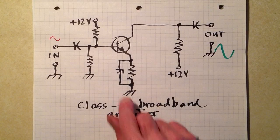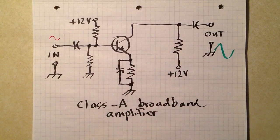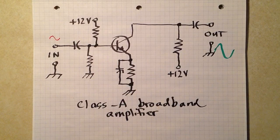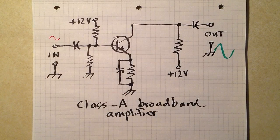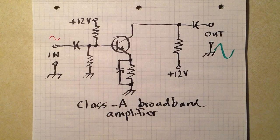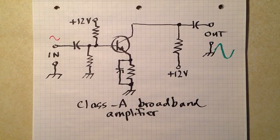In general, the larger the capacitances, the lower the frequency that it's intended to work at. Conversely, the smaller the capacitances, the higher the frequency it's intended to work at.